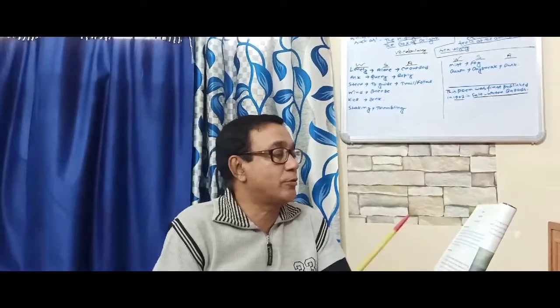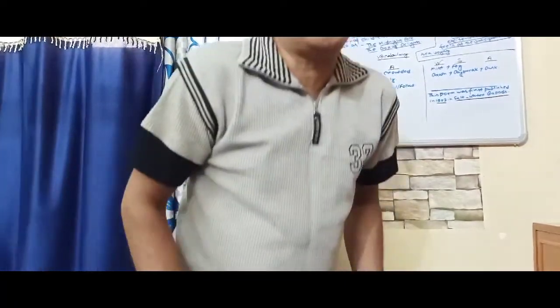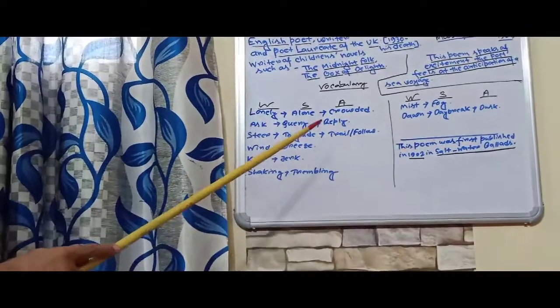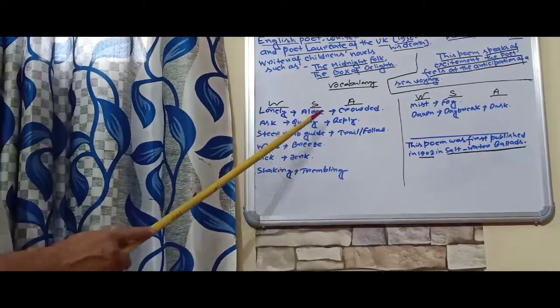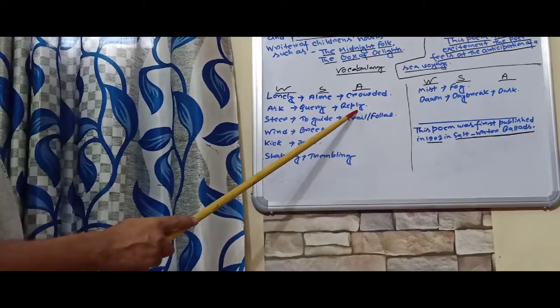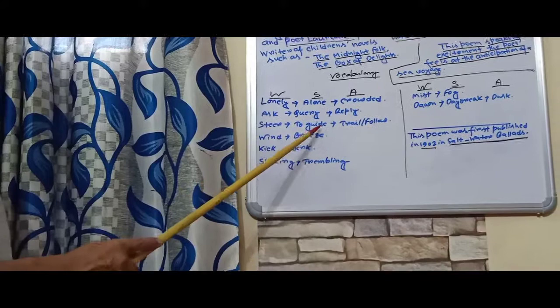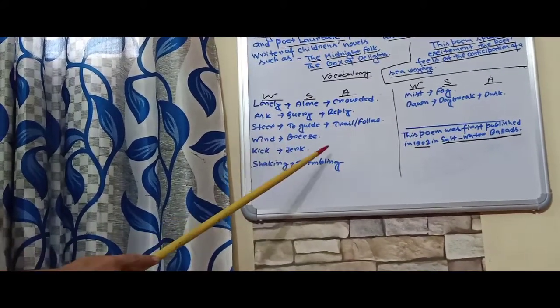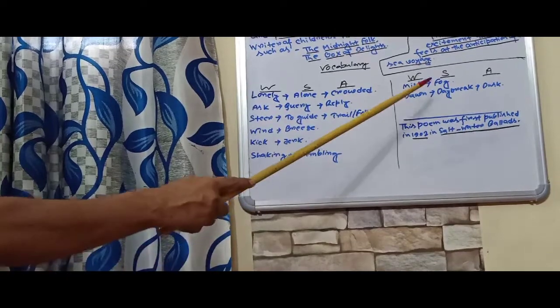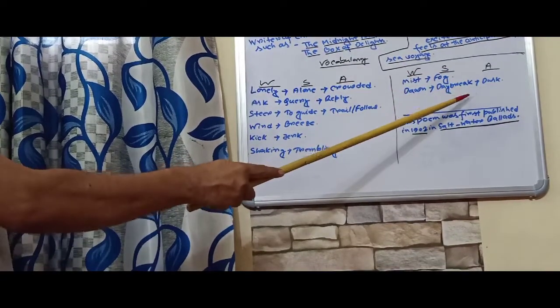Thank you for being with me. Before finishing today's teaching, I want to draw your attention to the board where some vocabulary is listed. 'Lonely' means alone; opposite is crowded. 'Ask' means question or query; opposite is reply. 'Steer' means to guide; opposite is trail or follow. 'Wind' means breeze or hawa. 'Kick' means jerk; 'shaking' means trembling. 'Mist' means fog. 'Dawn' means daybreak; opposite is dusk.